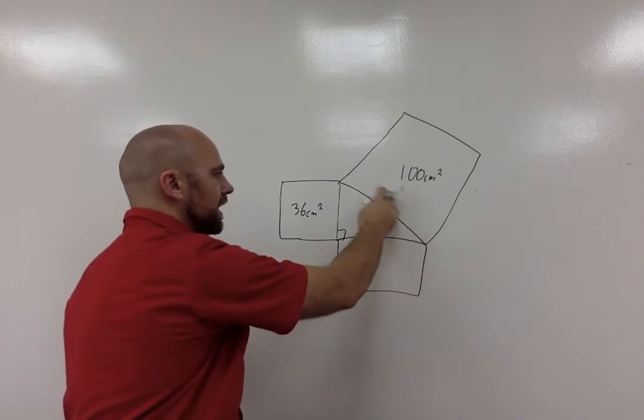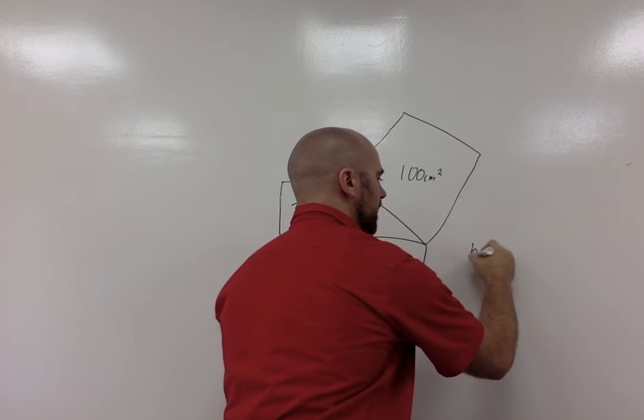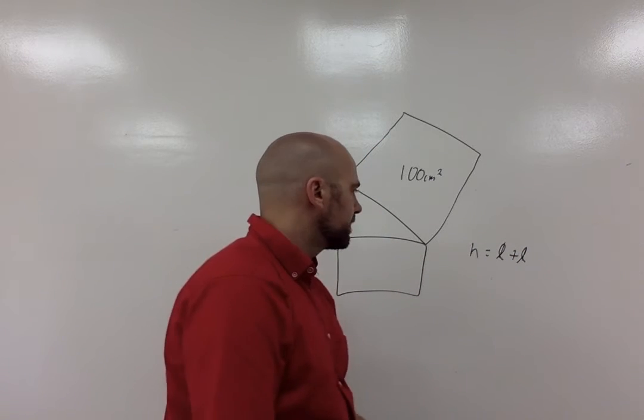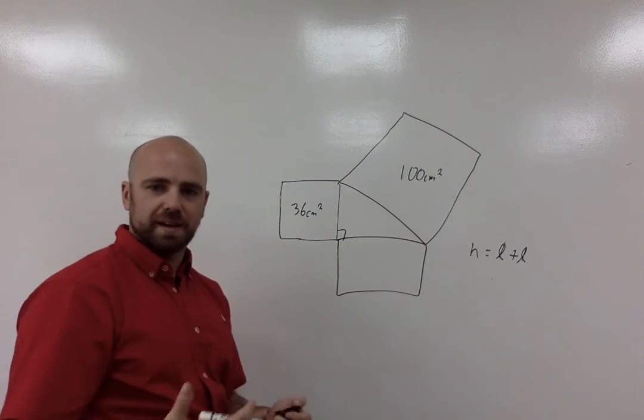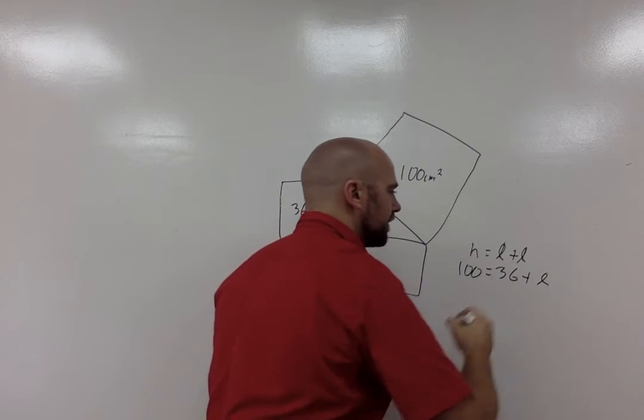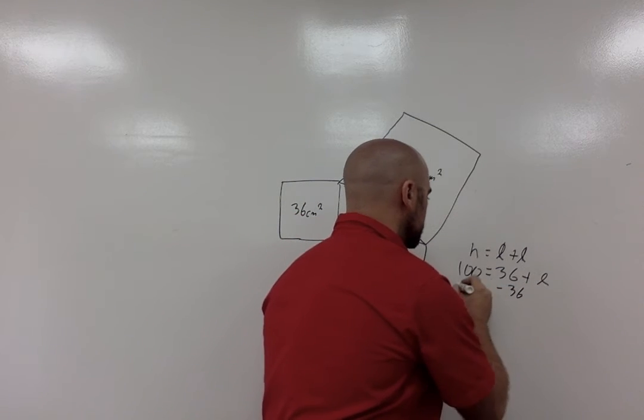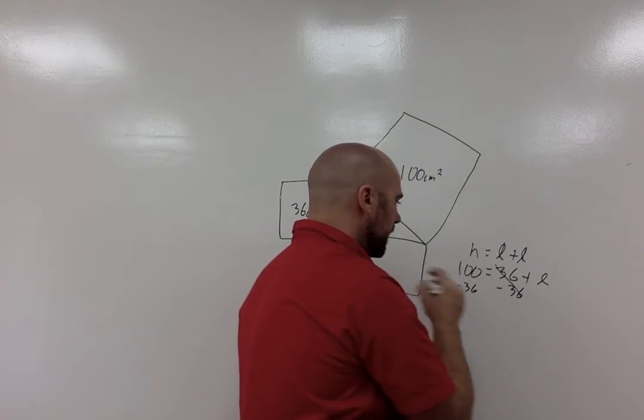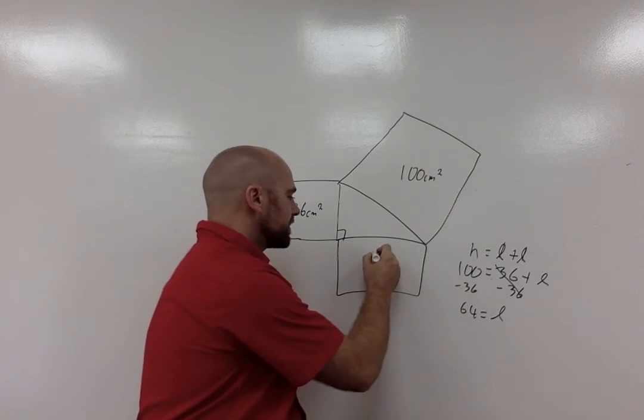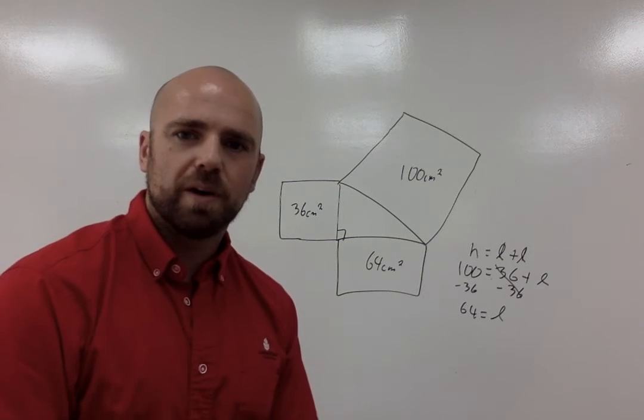We can simply go. We have the length of our hypotenuse. Normally, we would go our square of our hypotenuse equals our leg plus our leg. We have our hypotenuse equals our leg plus our leg. We can put in the information that we have. We have 100 equals 36 plus one of our legs. I want to try to get the leg by itself, so I can subtract 36 from both sides. I'm getting 64 equals the length or the area of my leg. So I can determine that this one is 64 centimeters squared.